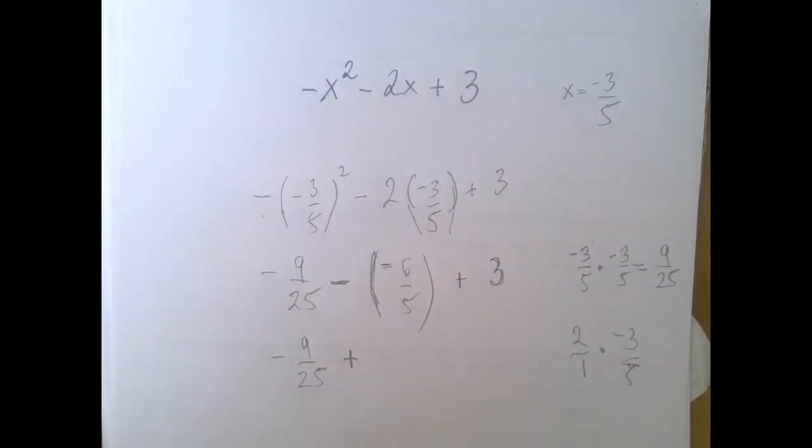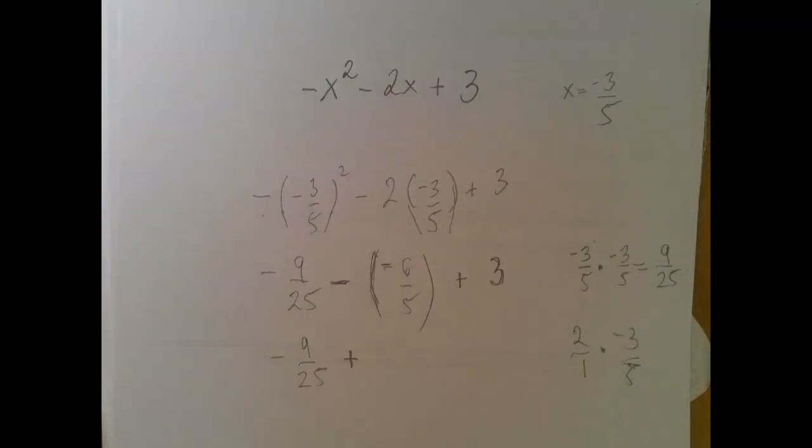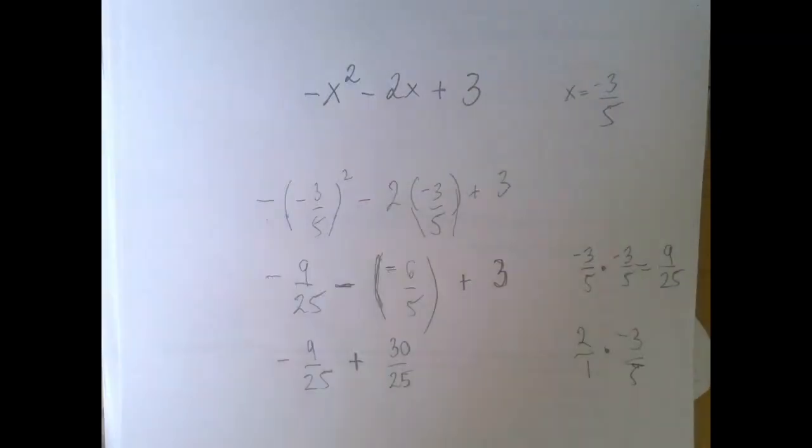But we can work on the common denominator. We're going to have to match 25. So we can multiply both upstairs and downstairs by 5. Then we get 30 over 25.